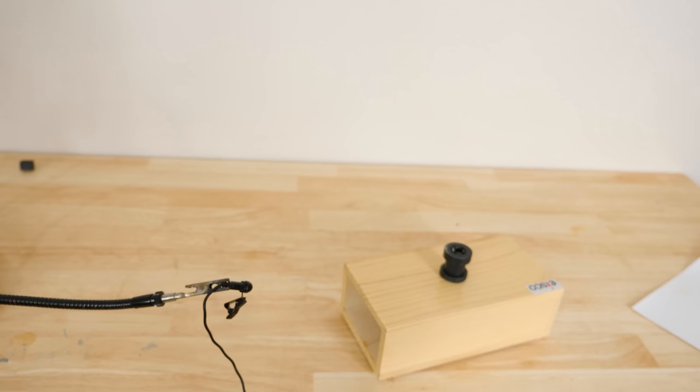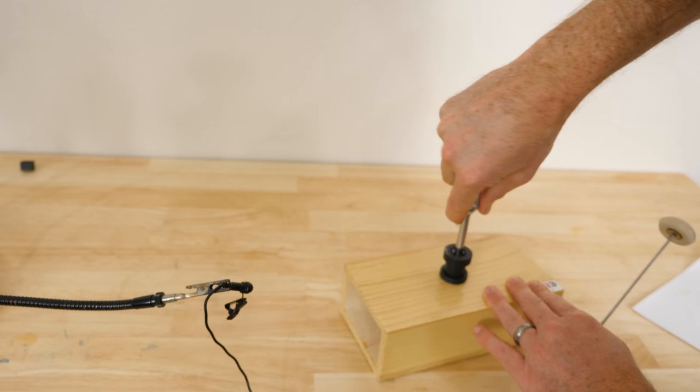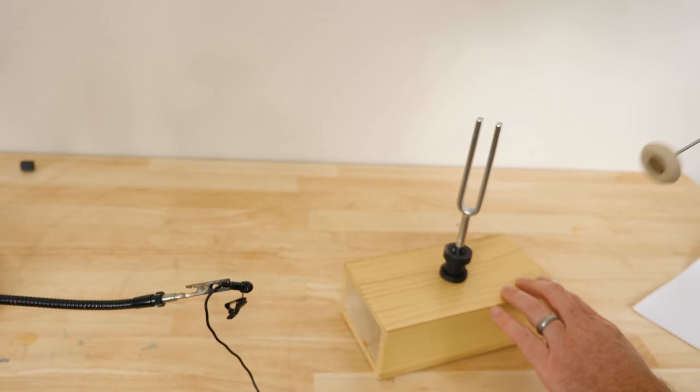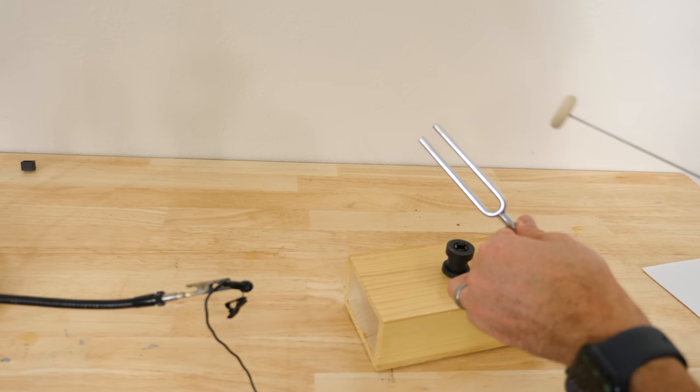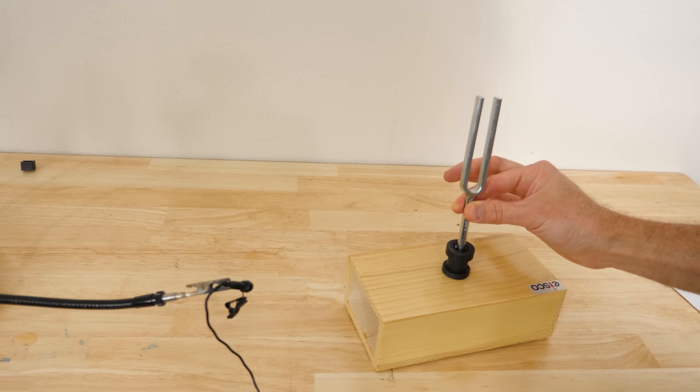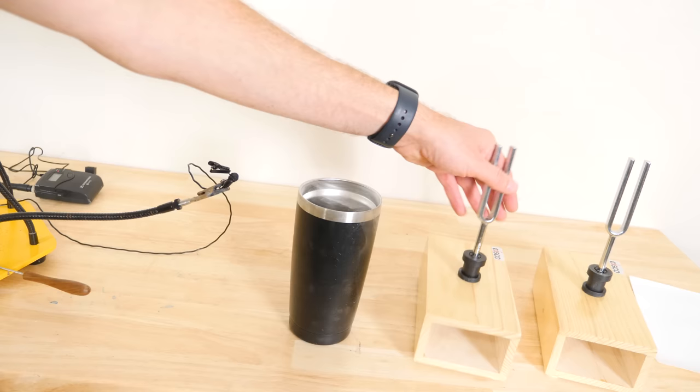But we can make it even louder by putting it against this wooden base. The tuning fork is also slightly moving in the longitudinal direction, so it'll push against the wooden base and cause it to wiggle at the same frequency. But since it's pushing so much more air, it sounds louder.